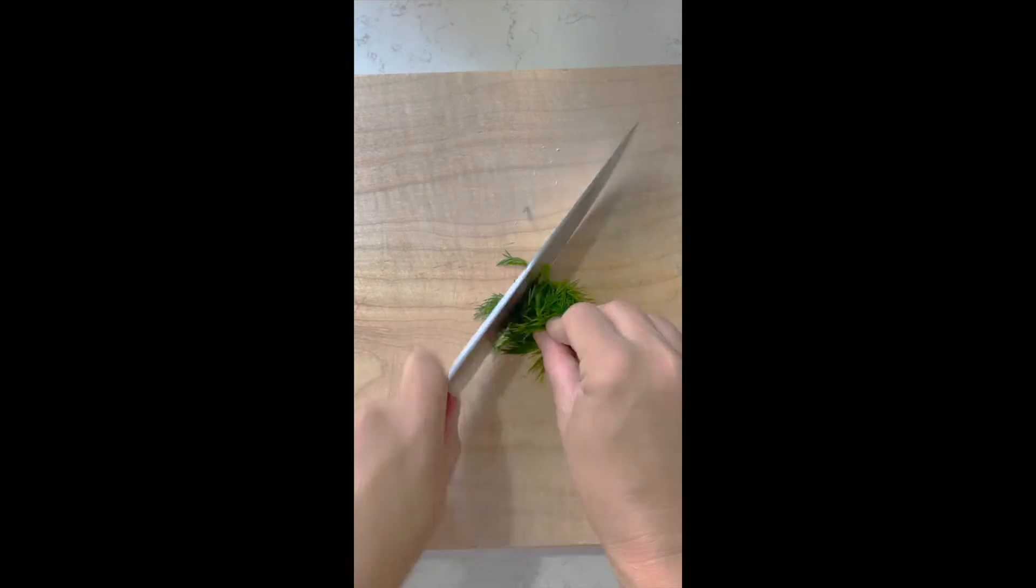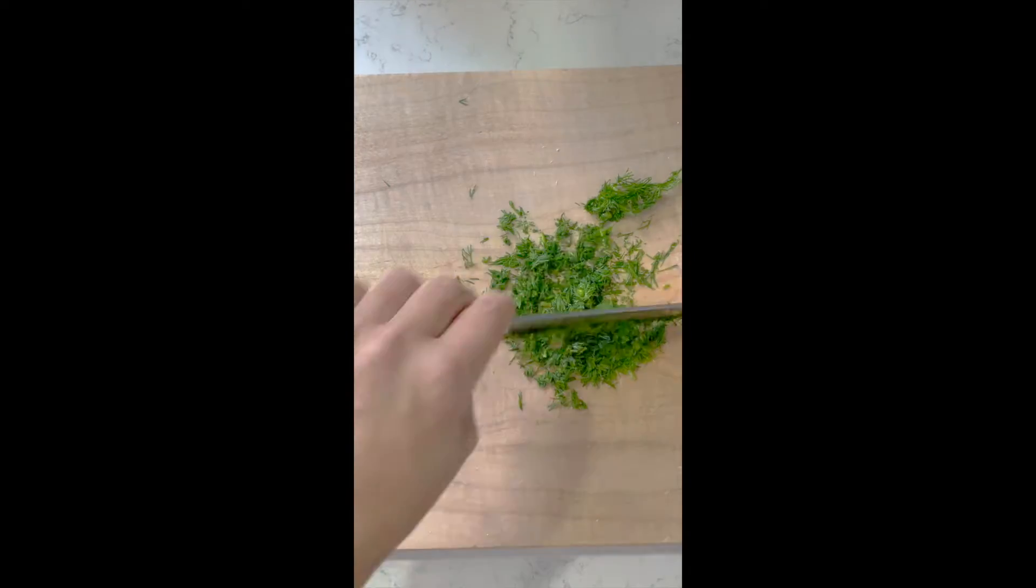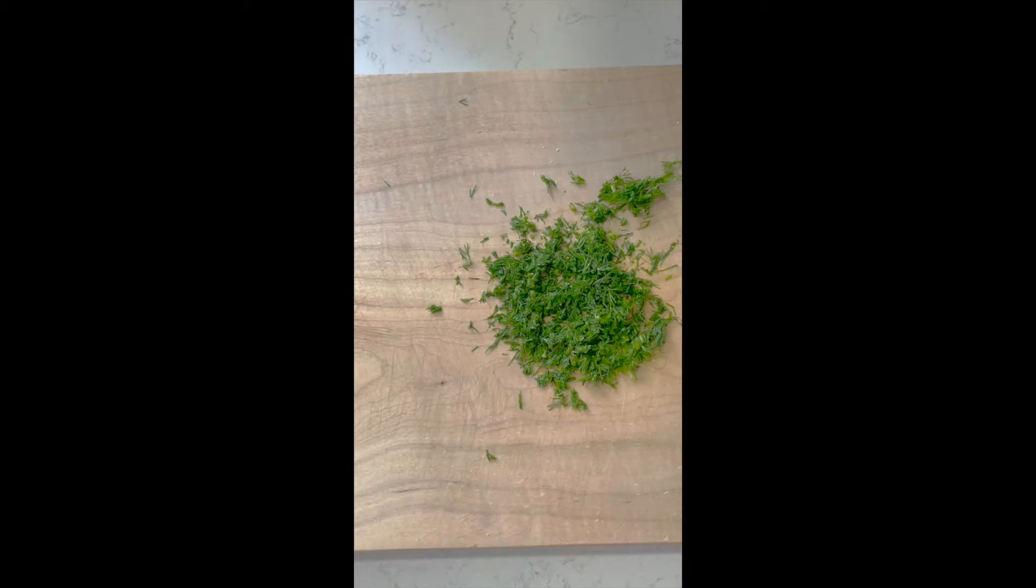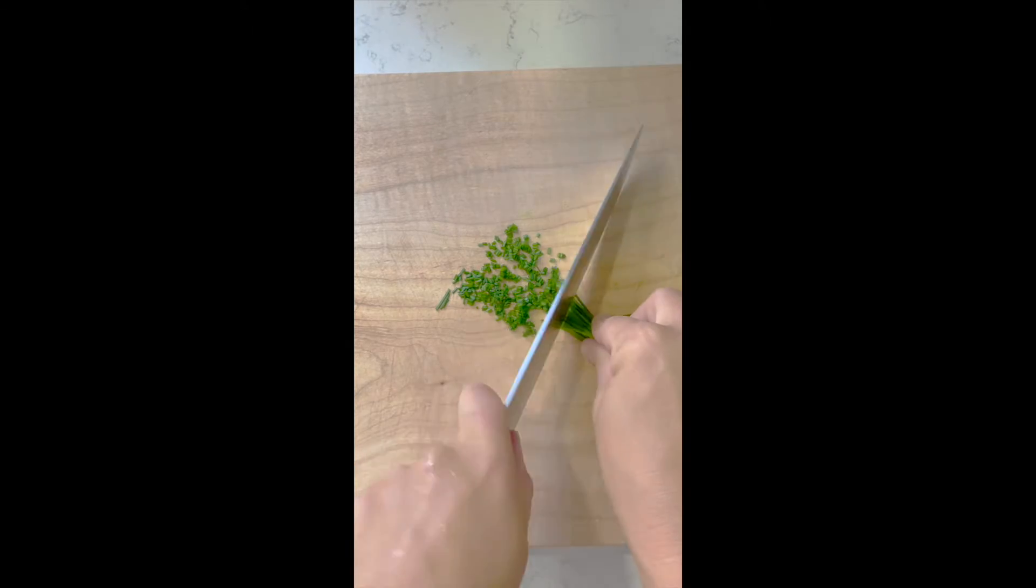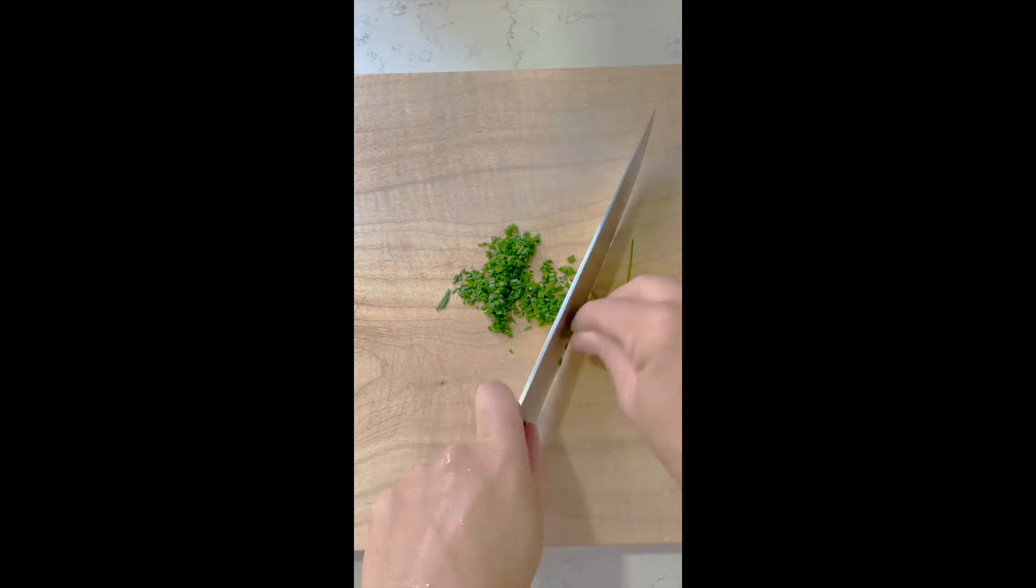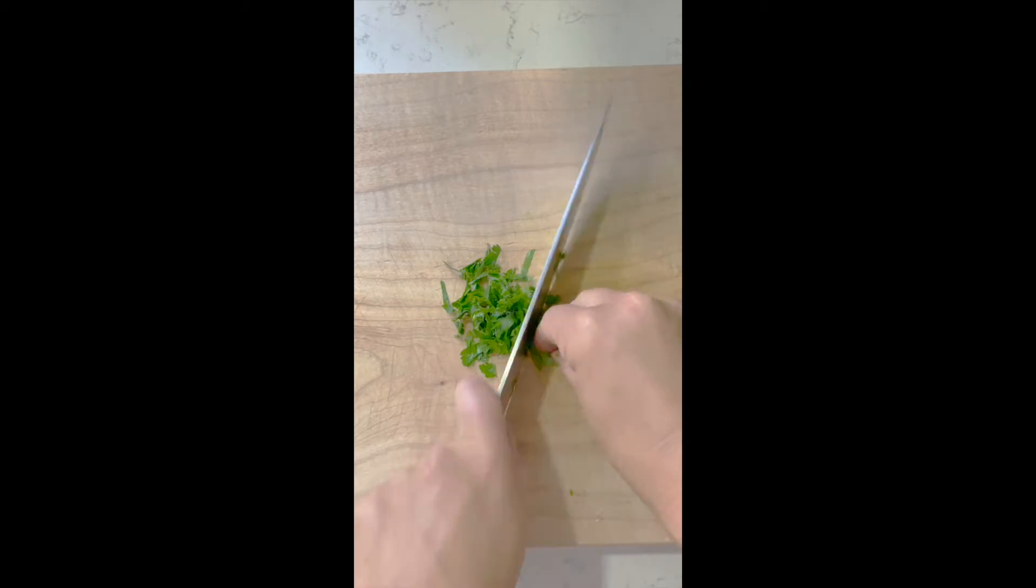Wash and chop dill. Wash and finely chop some chives. And finally wash and chop some parsley.